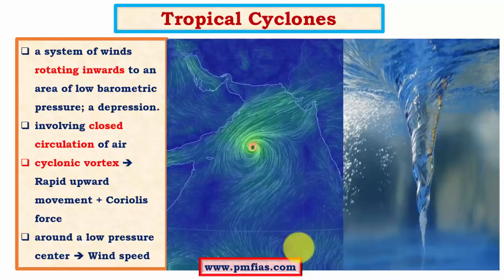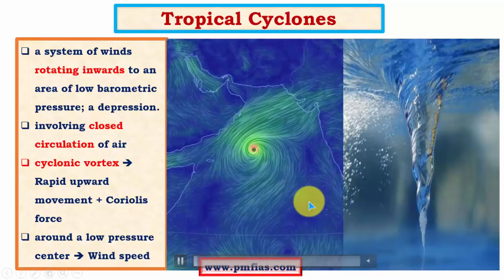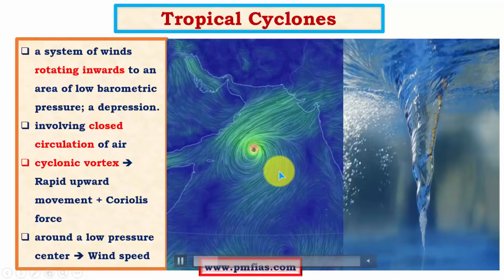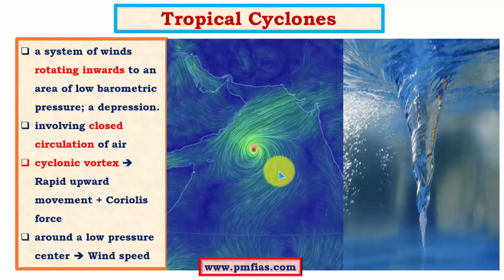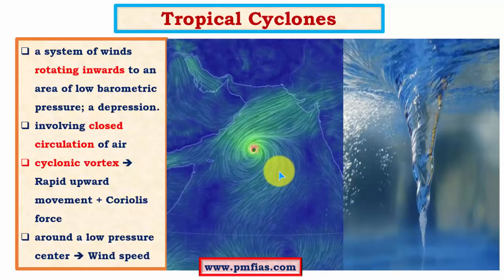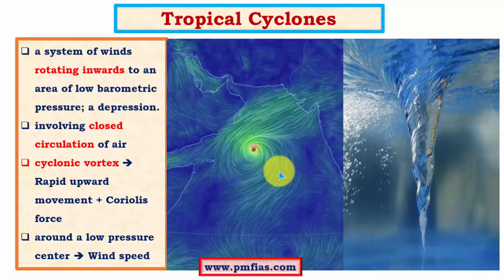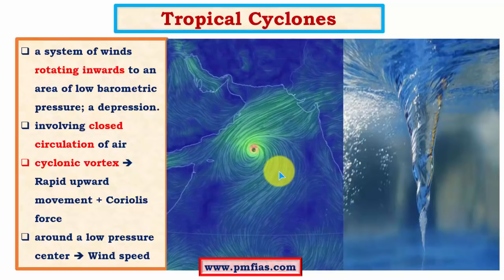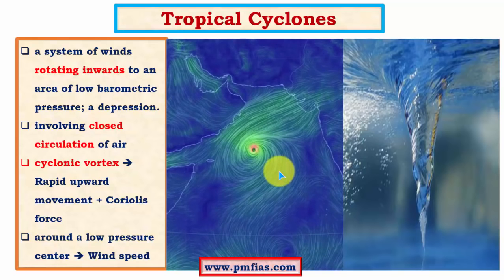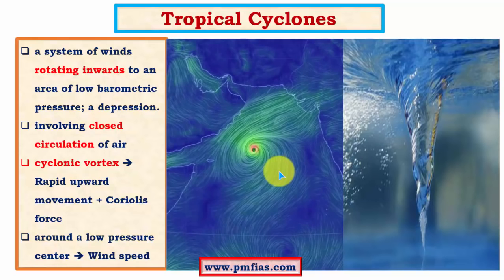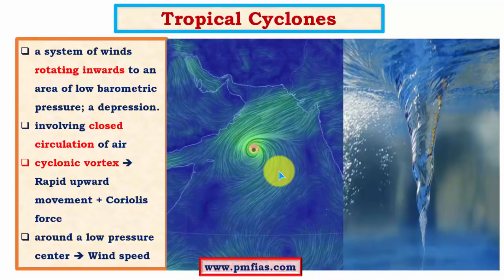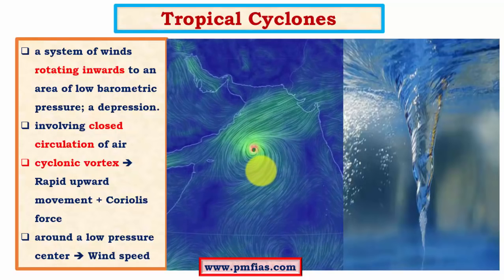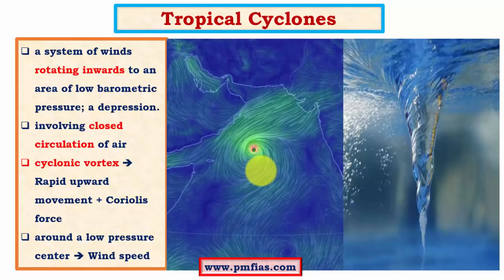We can see the formation of a cyclone in the Arabian Sea — at present there is a cyclone called Chapala forming in the Arabian Sea. As of October 30th it has reached the stage of a severe cyclonic storm with sustained wind velocities of about 170 to 180 kilometers per hour. We can see how winds are converging towards the center due to intense low pressure, and the spiraling rotation of the wind is created due to Coriolis force.